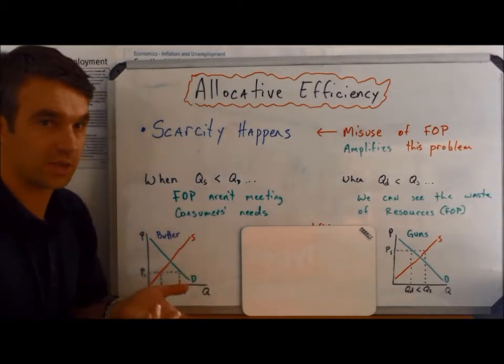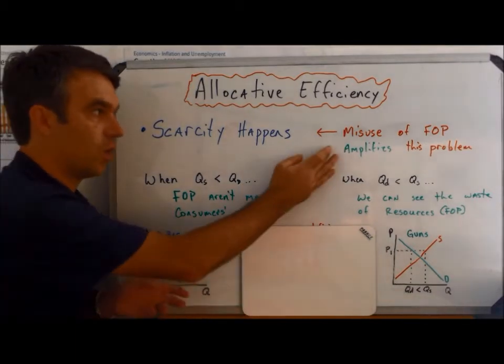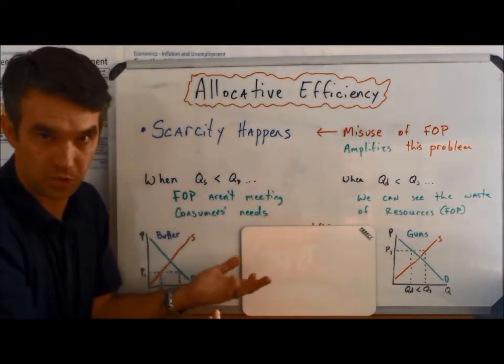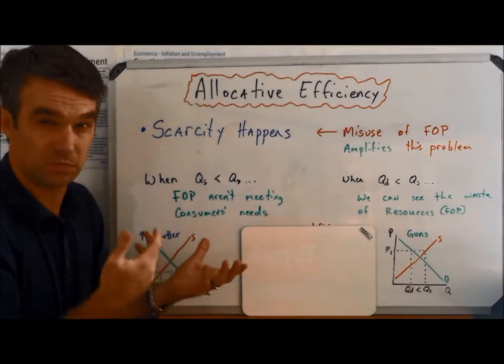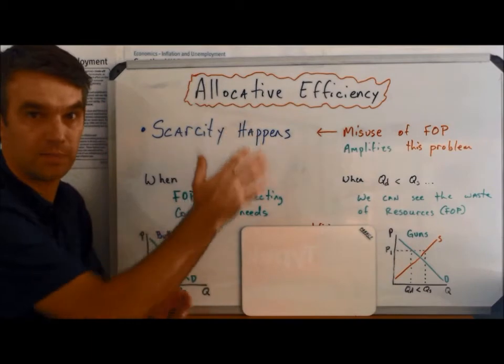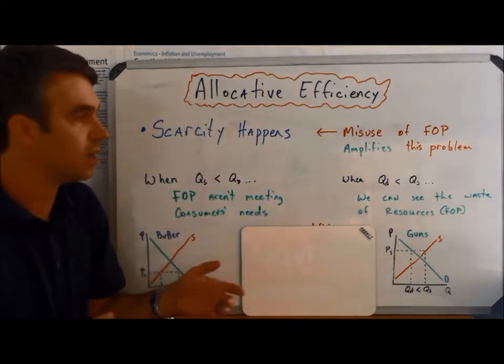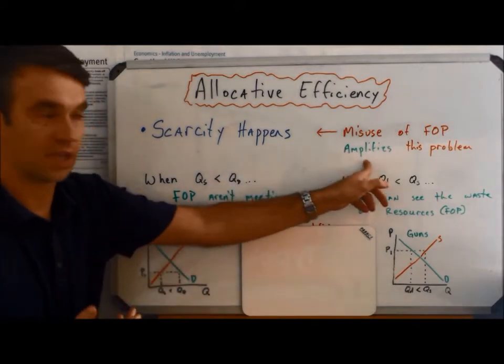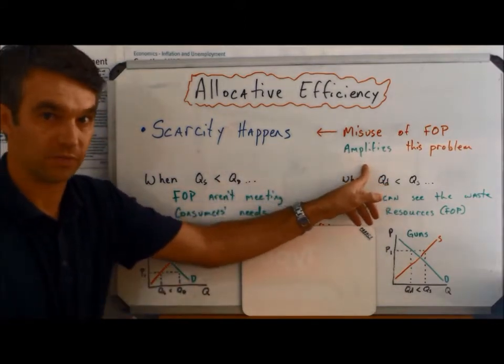The next logical assumption then is to say that if we have a scarce amount of factors of production, resources, if we misuse how we allocate those resources—remember the word allocate means to distribute—if we misuse our factors of production, this problem of scarcity is going to be made worse. It's going to be amplified.